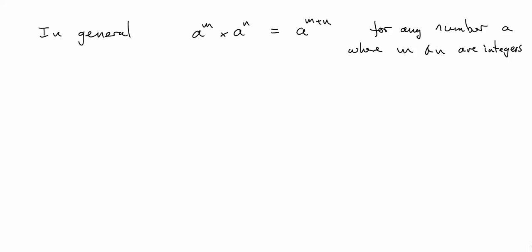In general, a to the power of m times a to the power of n is a to the power of m plus n — you add the indices. And a can be any number, positive or negative, provided m and n are integers. For the moment, we'll just deal with m and n being integers.